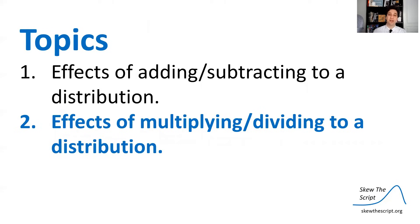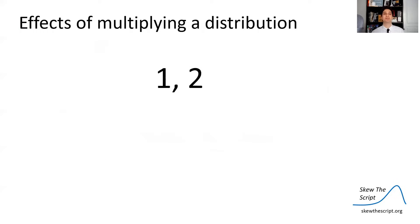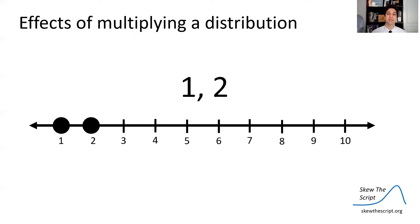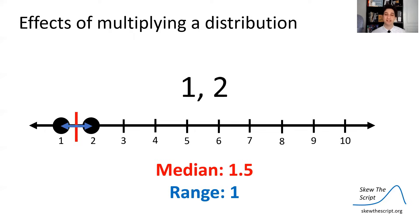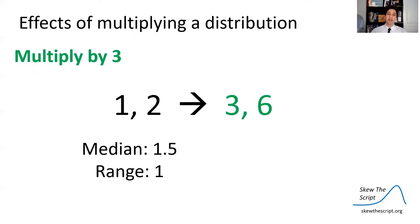Now let's talk about when you multiply or divide a constant to a distribution. Say we have a very simple data set composed of two data points: one and two. Let's put those on a number line. Their median is 1.5, and the range between them — two minus one — is one. But say we multiply every data point by three: 1 times 3 is 3, 2 times 3 is 6. So our new data set is 3 and 6.